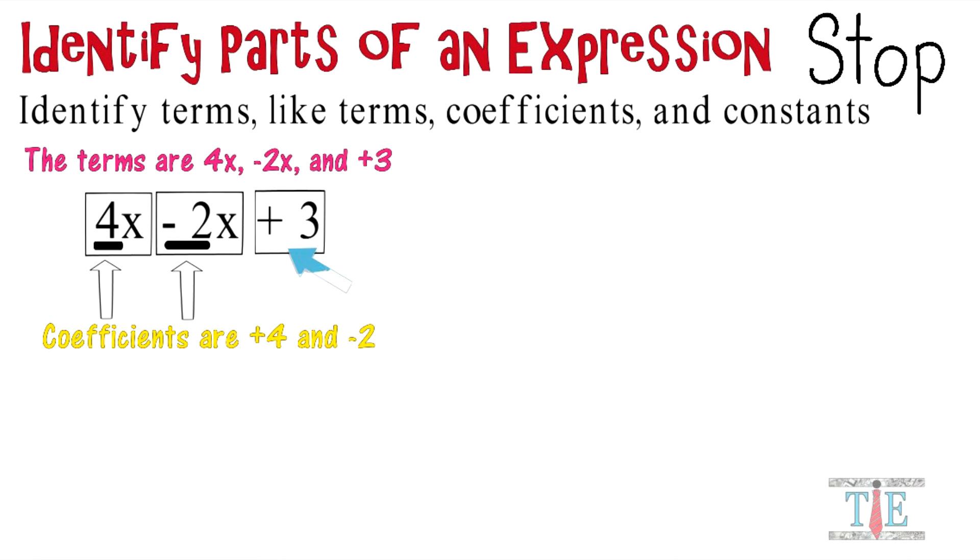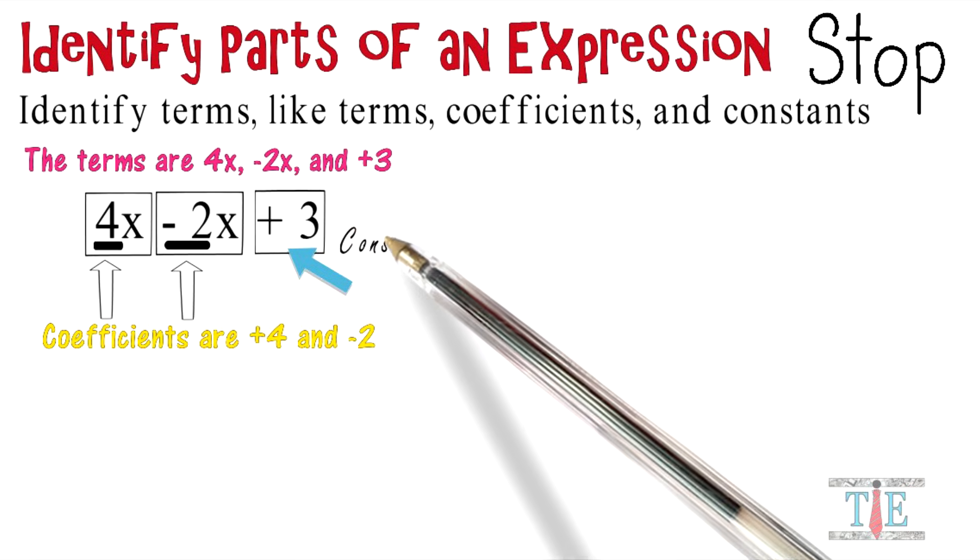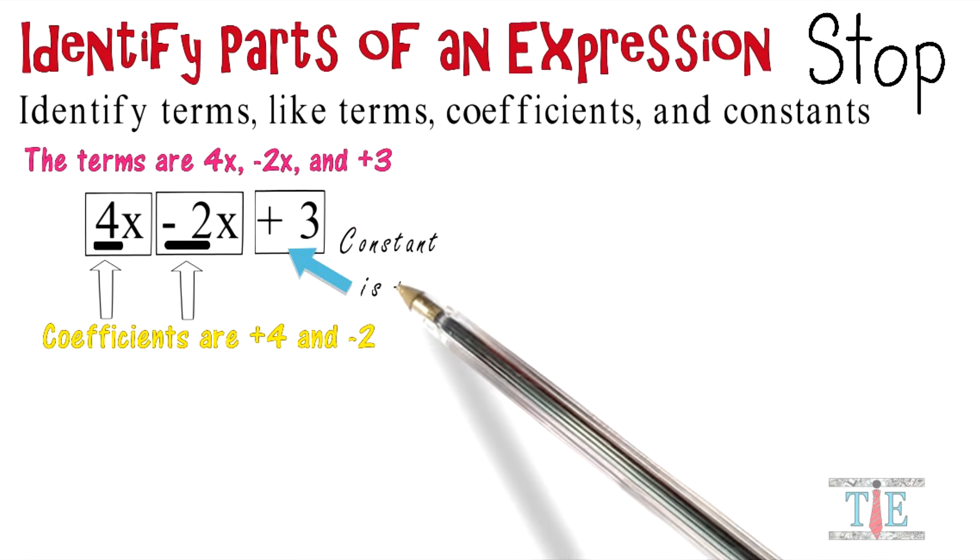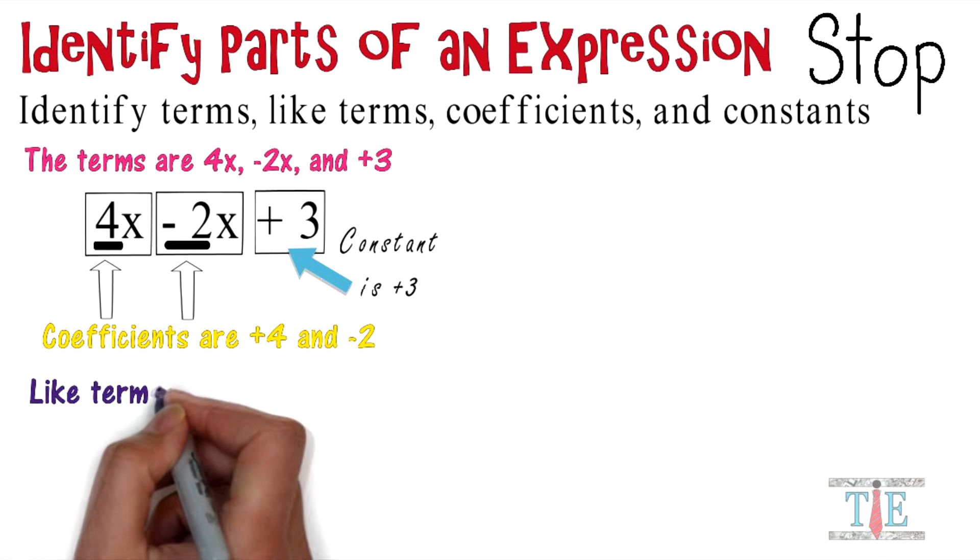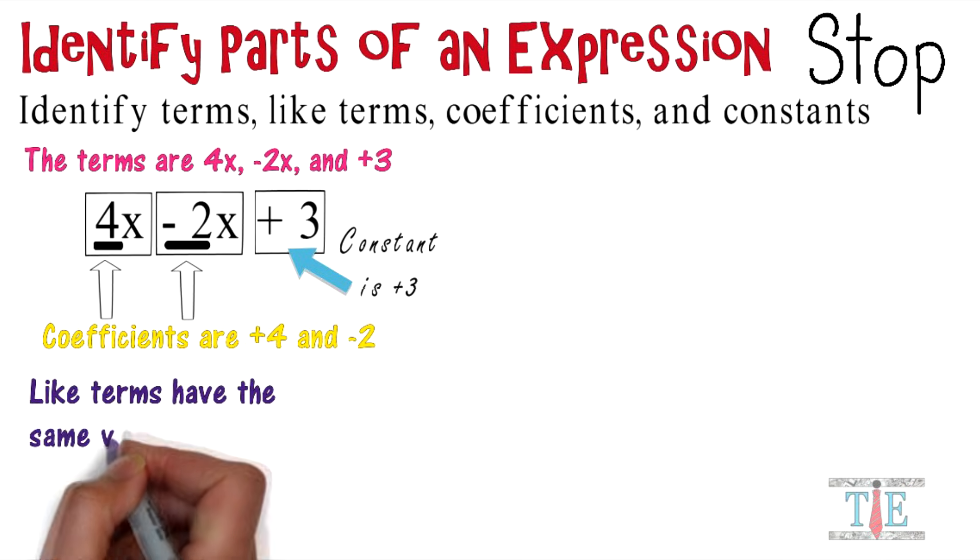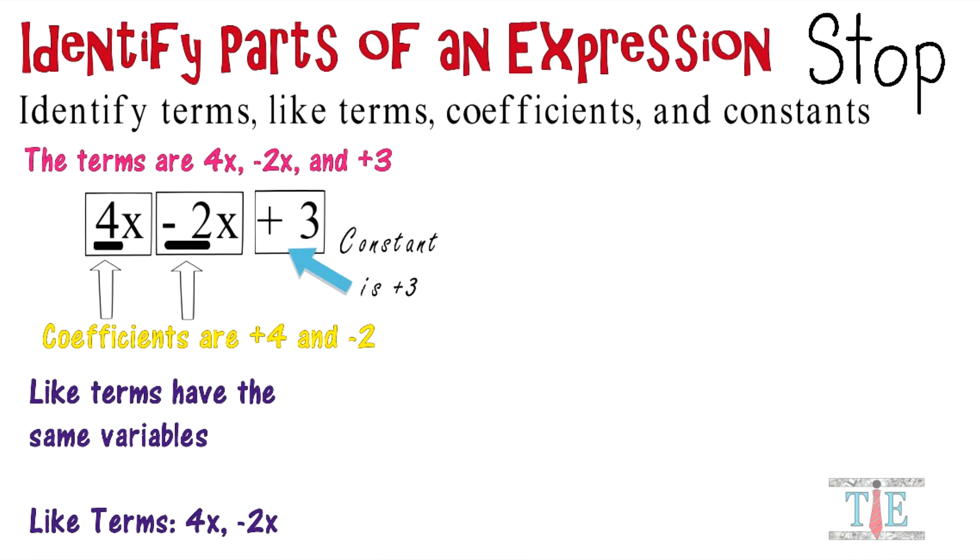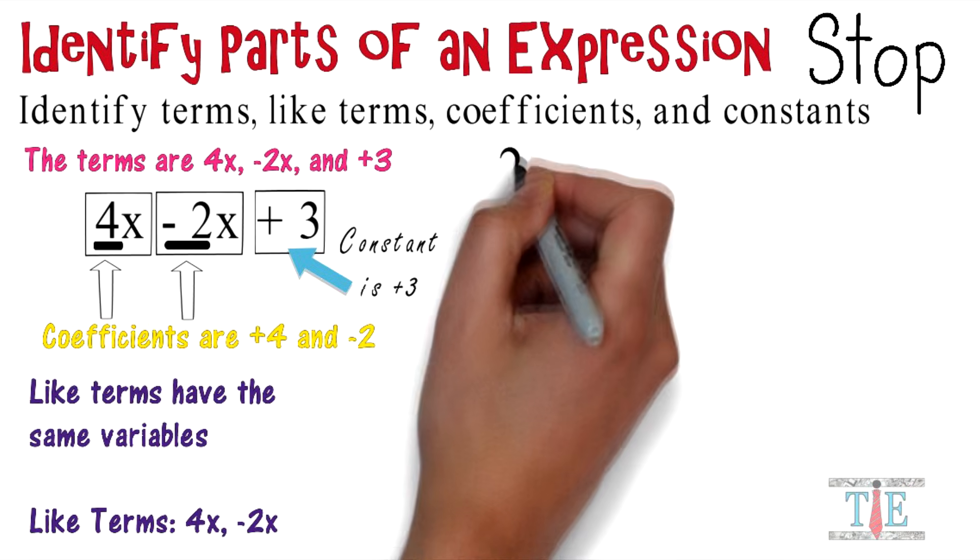And if you notice what's left over, you have a positive 3. This positive 3 is actually called the constant. Also, like terms have the same variables. Like terms are 4x and negative 2x because they are both x's. Constants can be like terms as well.